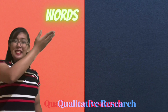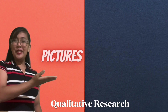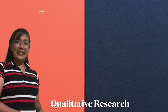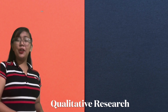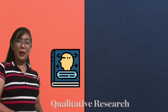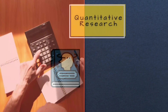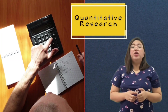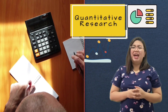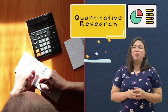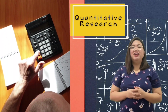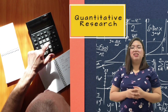In qualitative research, data comes in the form of words, pictures, and objects. This type of analysis is case-based or takes a holistic perspective of human behavior. In quantitative research, data is numerical, and the analysis is variable-based, using mathematical and statistical techniques.